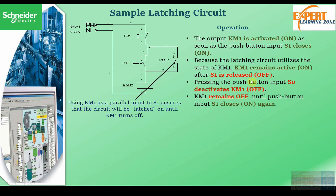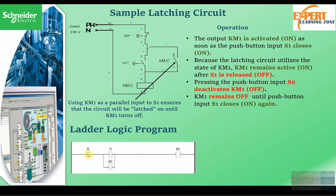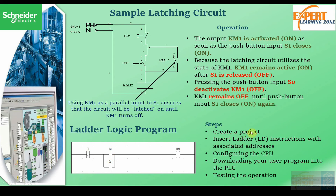Pressing push button S0 deactivates KM1. So if we push S0, which is connected in series with this line, the KM1 coil will be deactivated, and KM1 will remain off until we push S1 again. Using KM1 as a parallel input to S1 ensures that the circuit will remain latched until KM1 is turned off. The ladder logic program for this uses a normally closed contact for S0 and a normally open contact for S1. We are going to start by creating a new project, inserting ladder instructions with associated addresses, configuring the CPU, downloading the user program, and testing the operation.